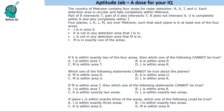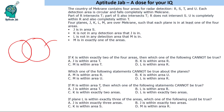The country of Migraine contains four areas of radar detection: R, S, T, and U. Each detection area is circular and falls completely within Migraine. Part of R intersects with T, part of S also intersects with T, and R does not intersect S. So R and S both intersect with T, meaning T must be somewhere in the center, with R and S on either side.